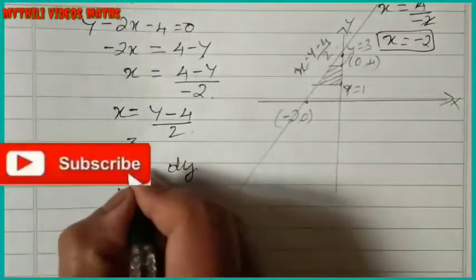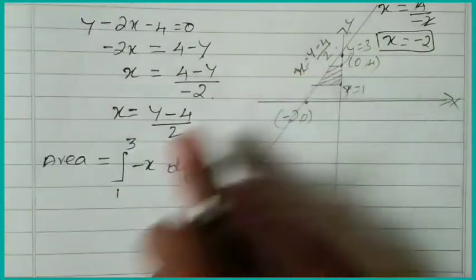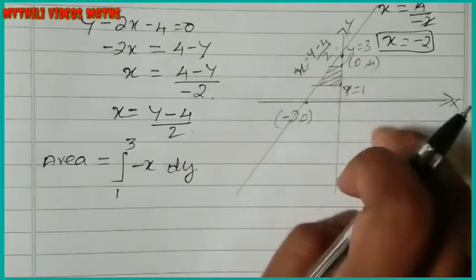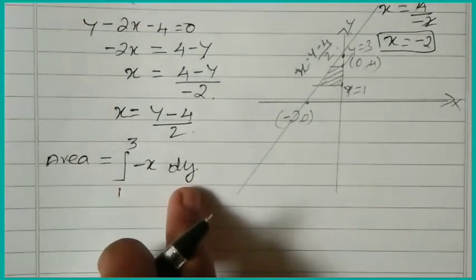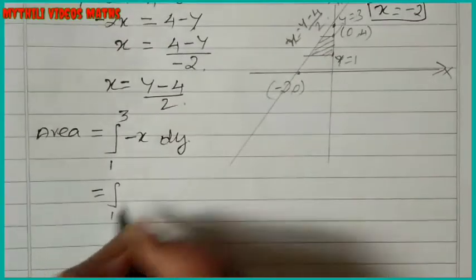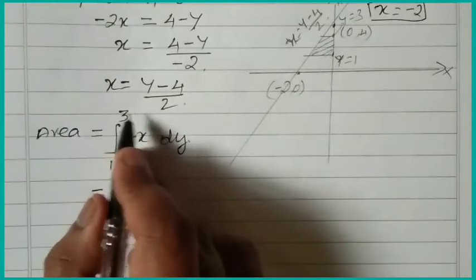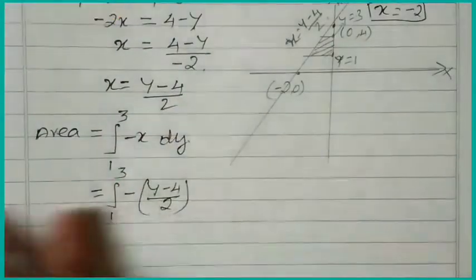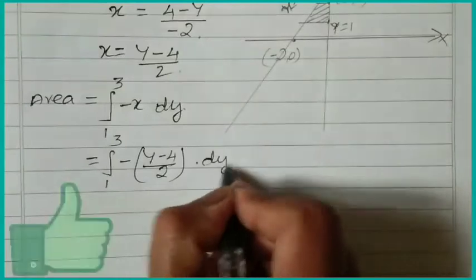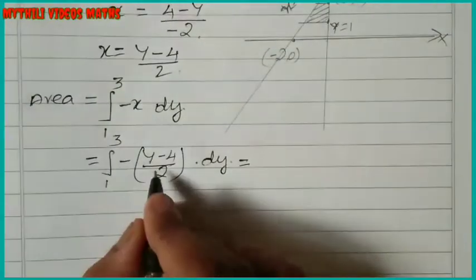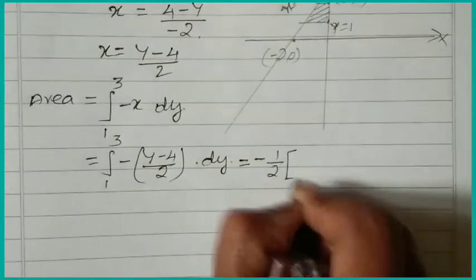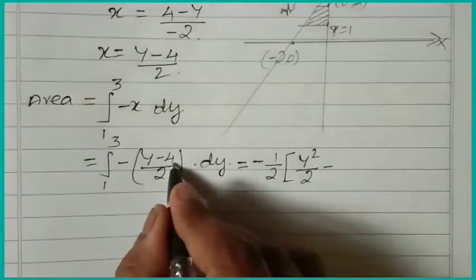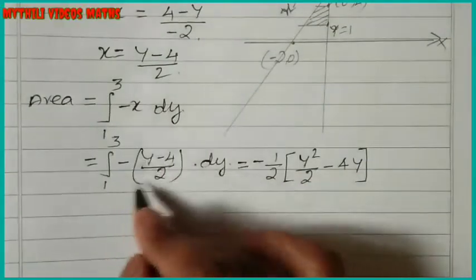So the area equals the integration from 1 to 3 of minus (y minus 4) divided by 2, dy. This equals minus one-half times the integral. Integrating y gives y squared divided by 2, and integrating minus 4 gives minus 4y. The limits are from 1 to 3.